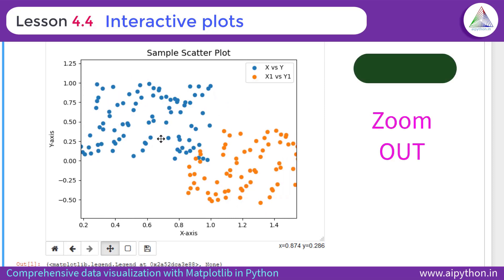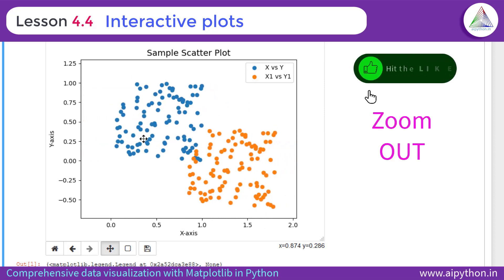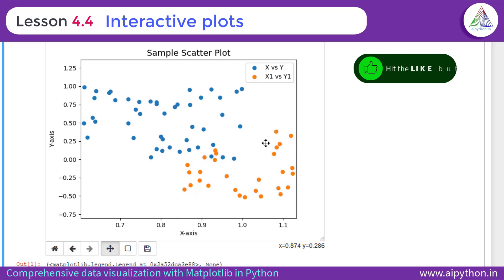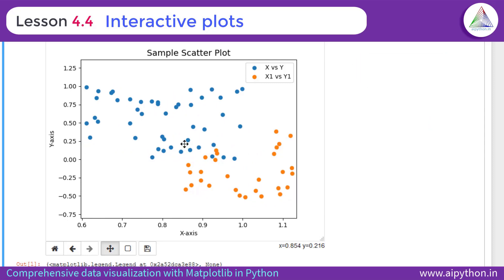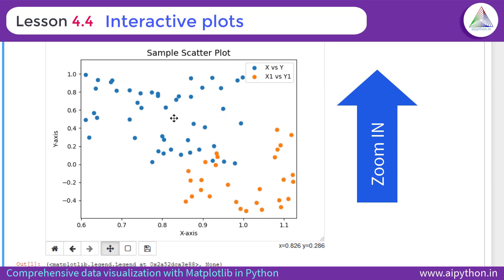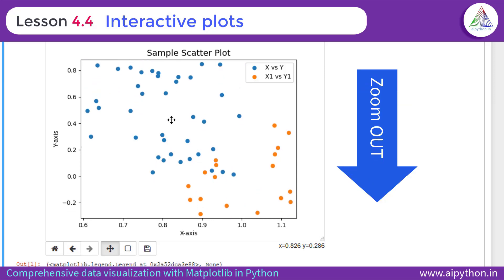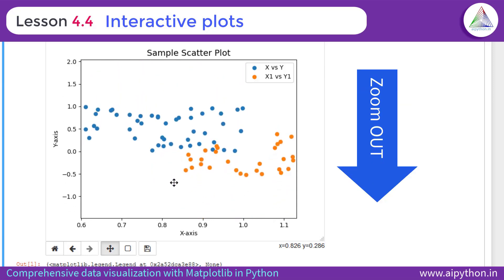As you can see here, this is zoomed out and this is zoomed in across X axis. Similarly, when you move along the vertical lines, it is zoom in towards upward and zoom out towards downward.